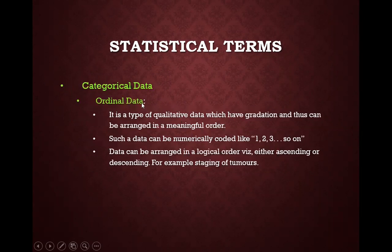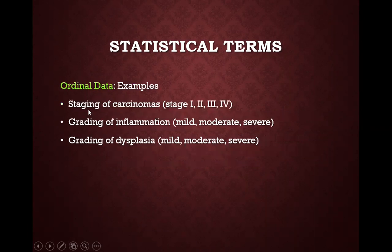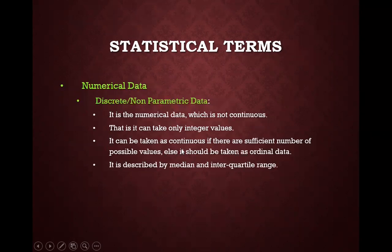The other type of categorical data is ordinal data. Ordinal data is a type of qualitative data that has gradations and thus can be arranged in a meaningful order. They are coded as 1, 2, 3 and so on. Examples include staging of carcinoma — stage 1, 2, 3, and 4 — grading of inflammation as mild, moderate, or severe, and grading of dysplasia as mild, moderate, or severe. Mild is less than moderate and moderate is less than severe, so these can be arranged in ascending or descending order.